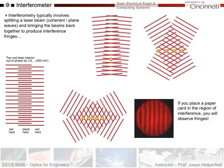This week you'll place a piece of paper in the region of interference and observe fringes, with a laser coming this way and a laser coming this way. As I bring them really closely together and lined up well, I'll start to see these fringes appear.